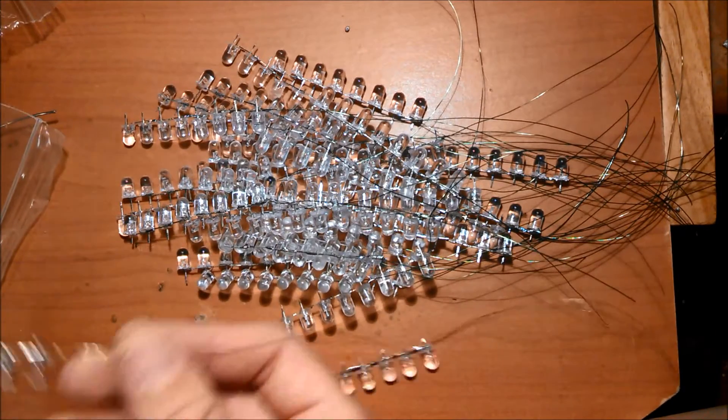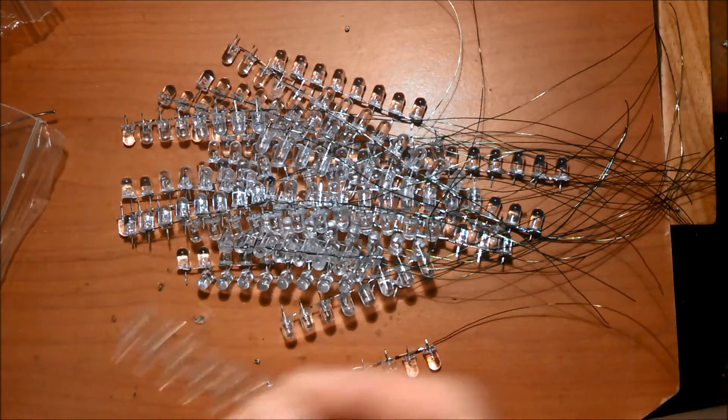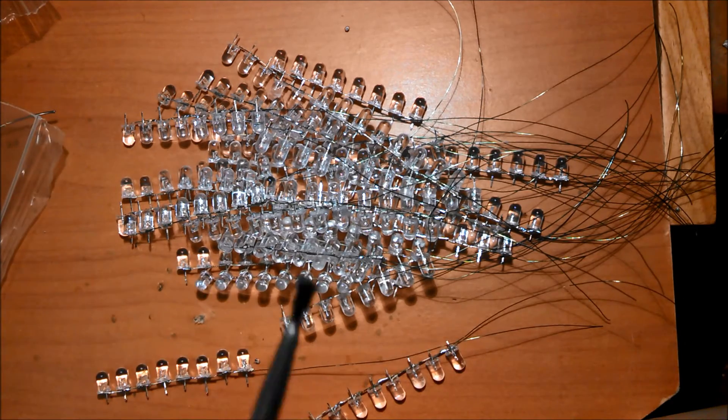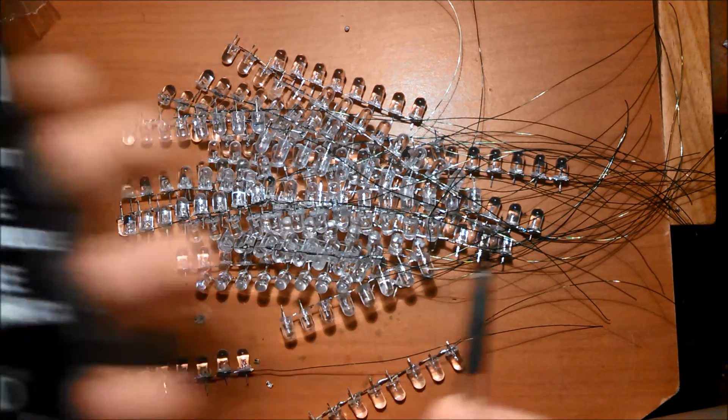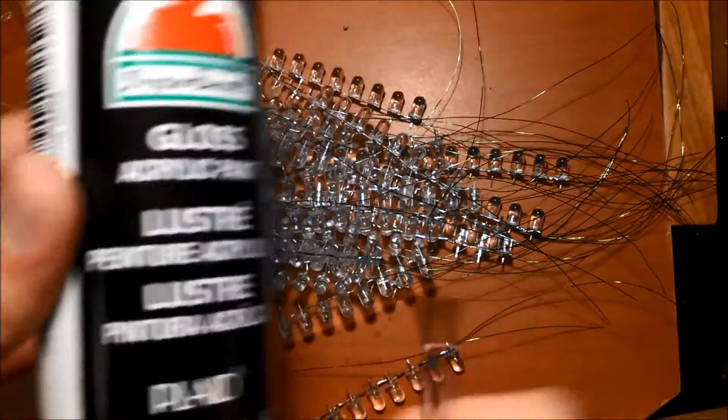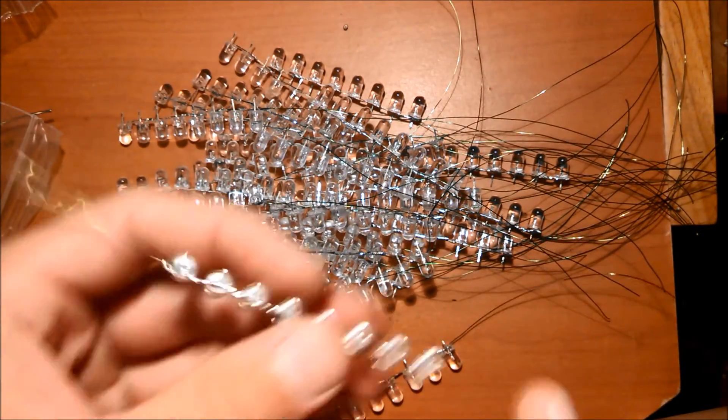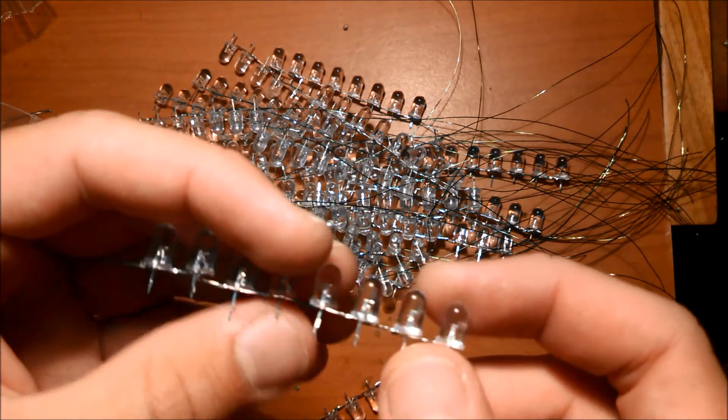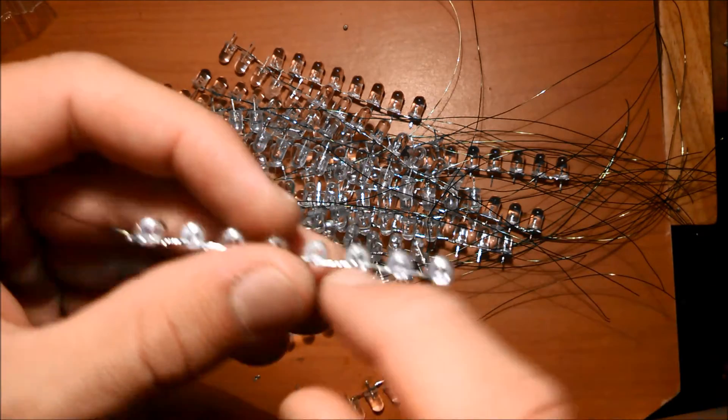So now that all of your LEDs are soldered, you're going to need a brush and some acrylic paint. You need this in order to paint the back side of all these LEDs to keep light from bouncing back from right there.